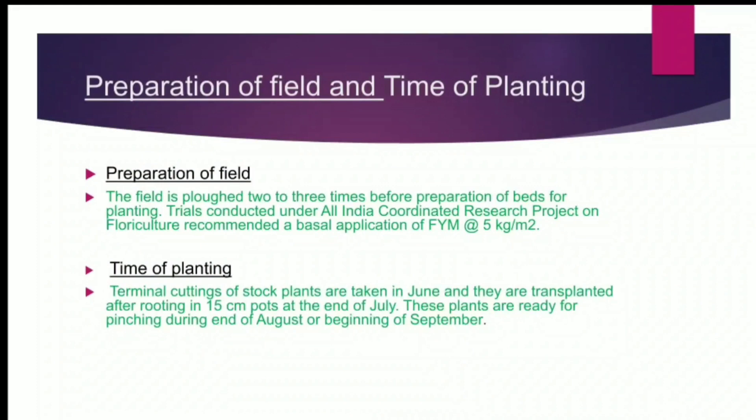Preparation of Field and Time of Planting. The field is ploughed 2 to 3 times before preparation of beds for planting. Trials conducted under the All India Coordinated Research Project on Floriculture recommended a basal application of FYM. Terminal cuttings of stock plants are taken in June and transplanted after rooting in 15 cm pods at the end of July. These plants are ready for pinching during end of August or beginning of September.